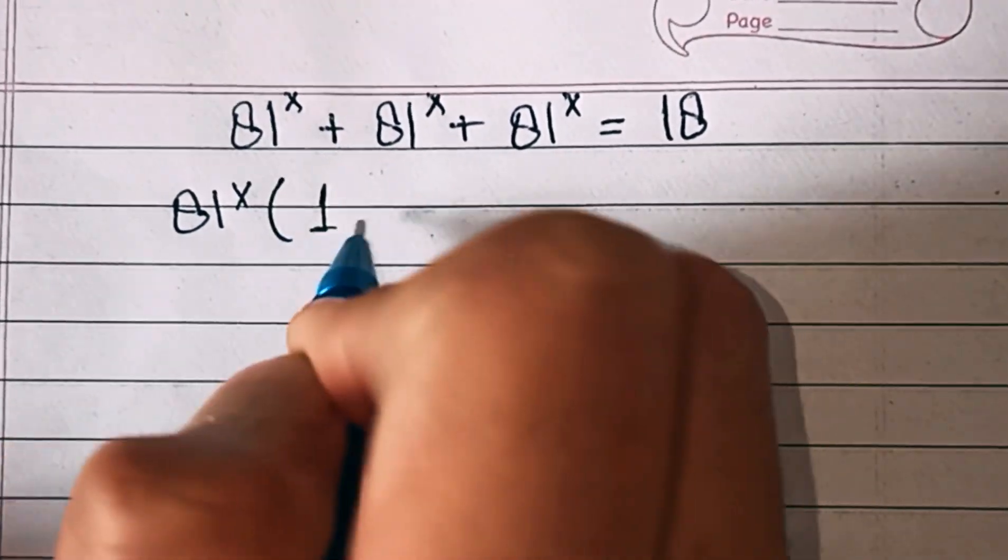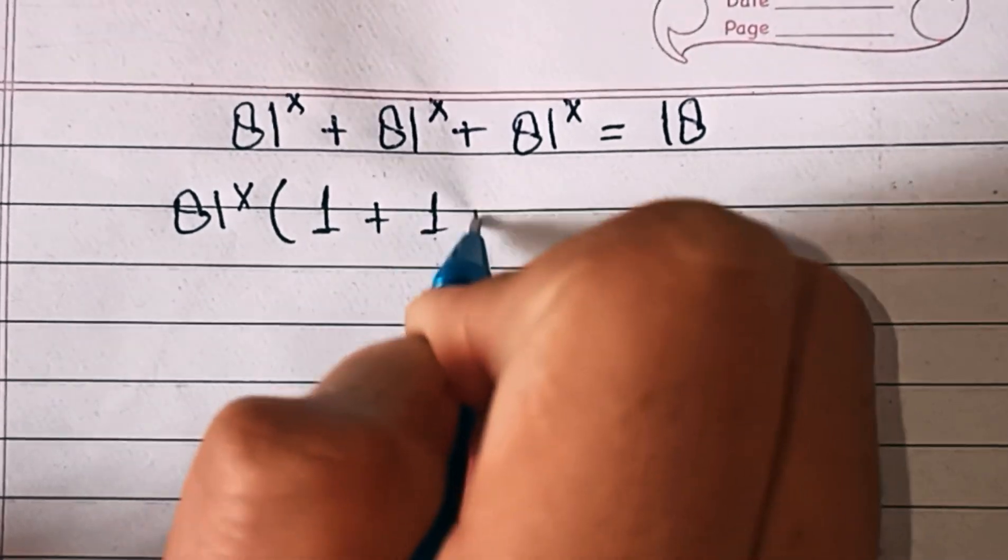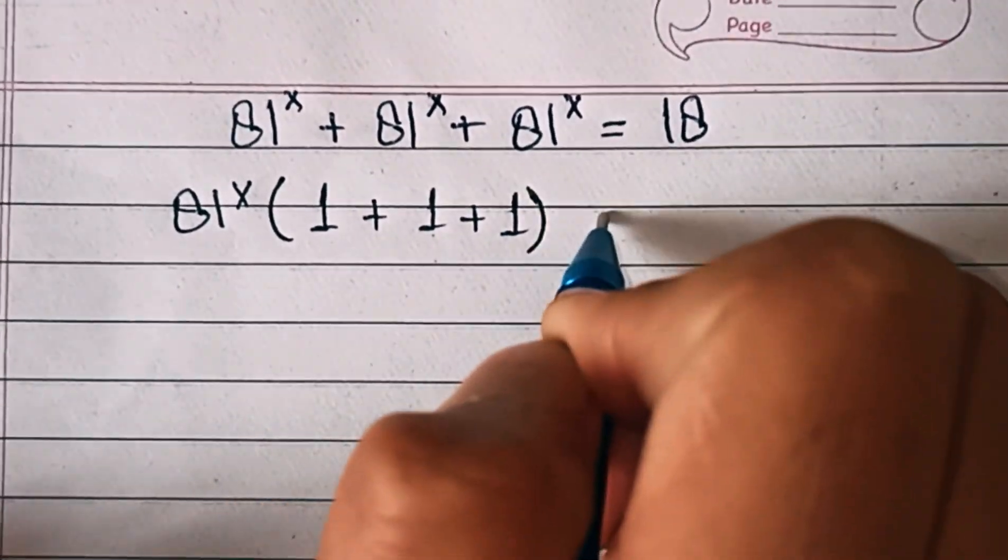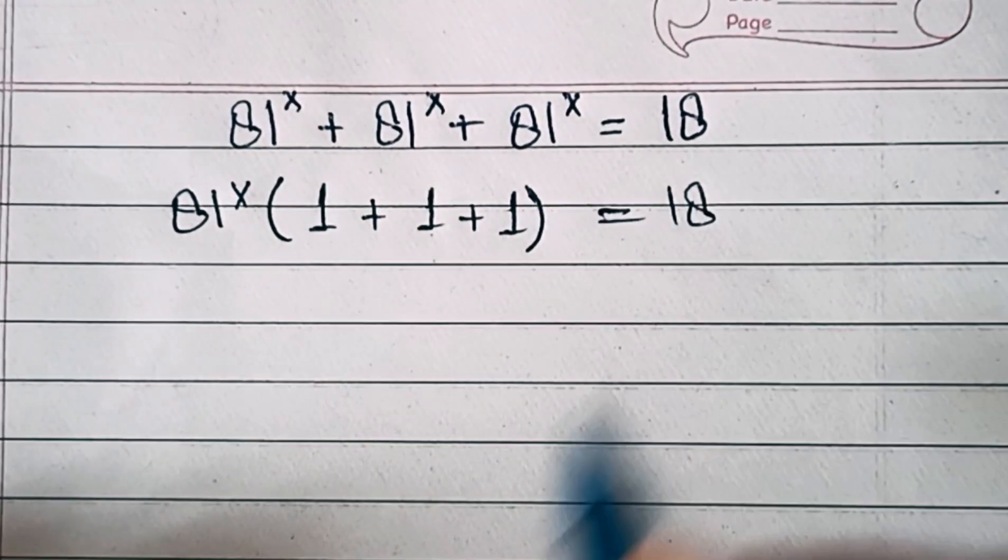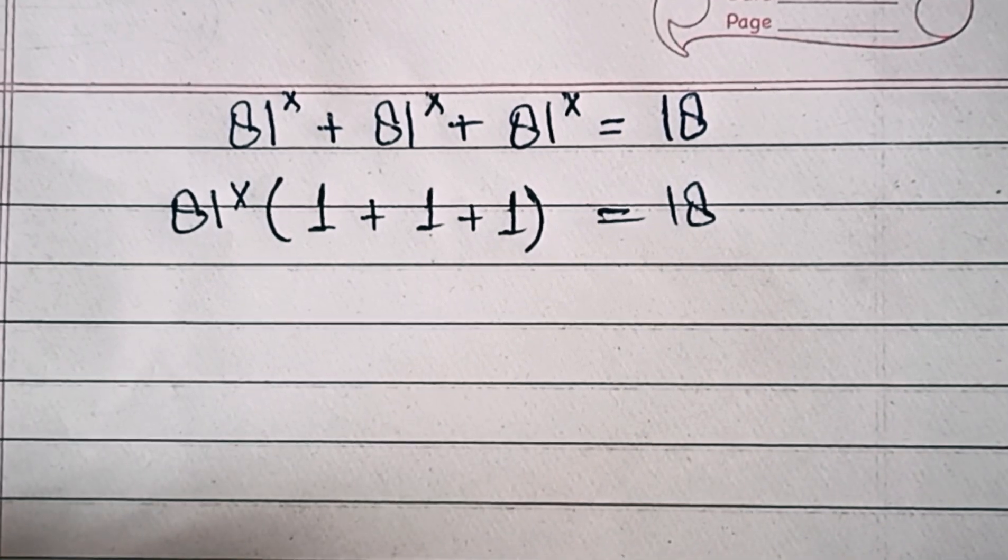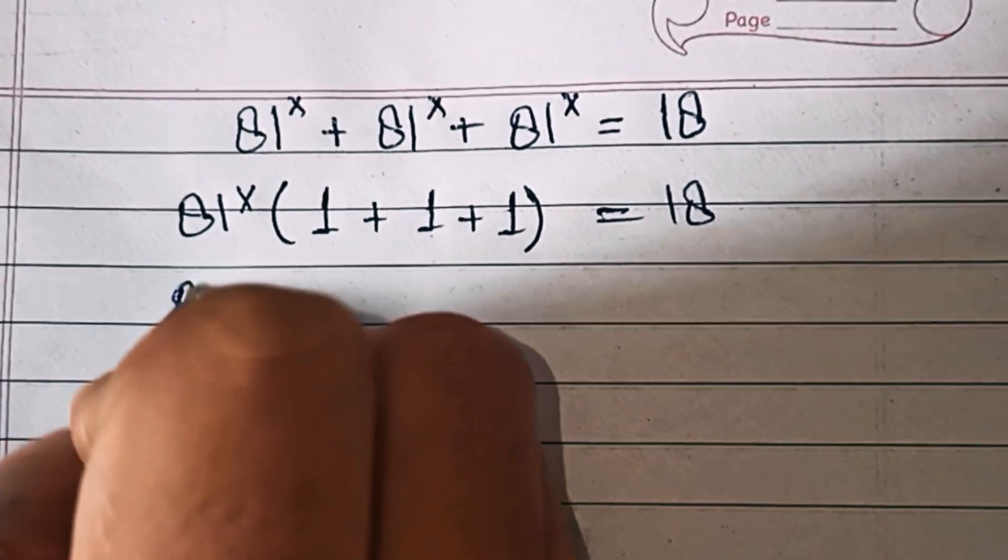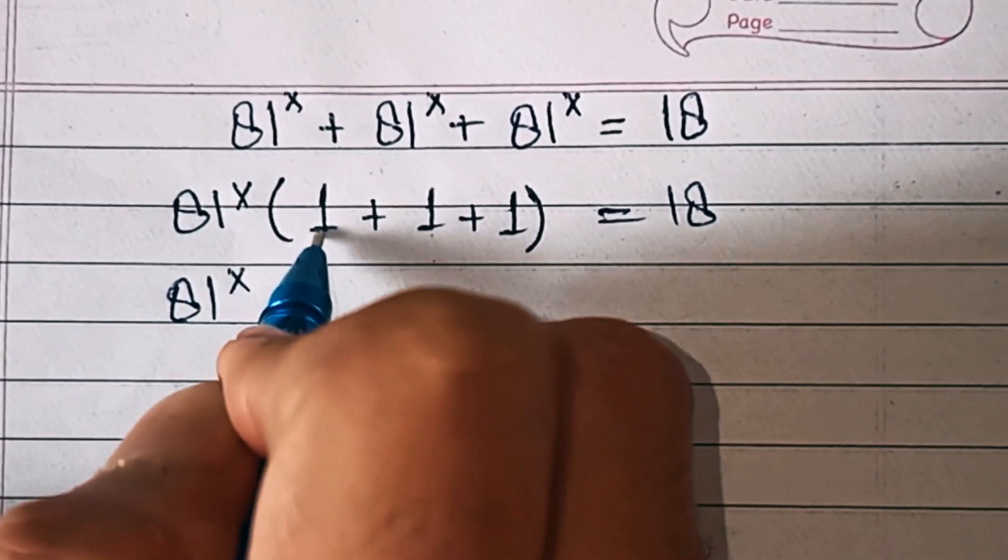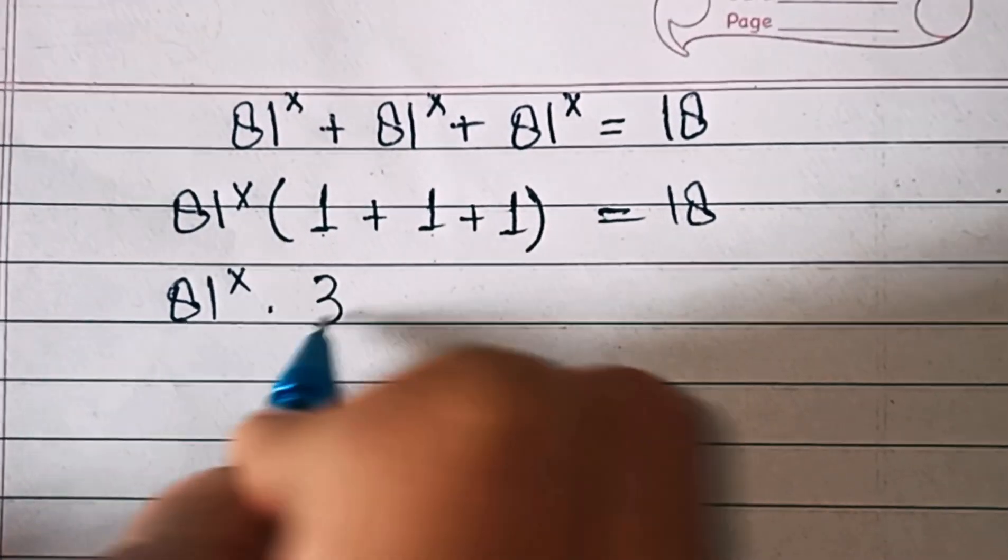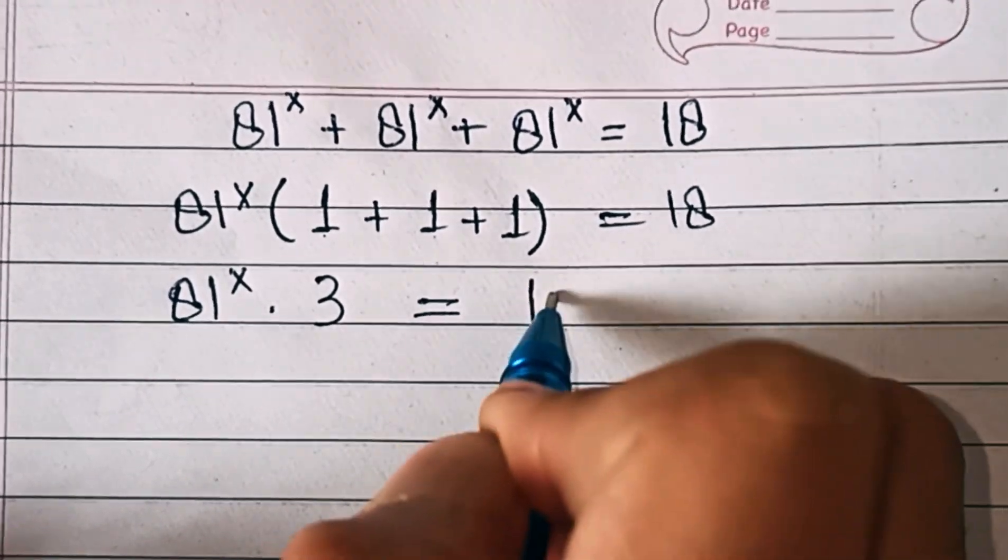In the next step, this is 81 power x, then 1 plus 1 plus 1 equals 3, which equals 18.